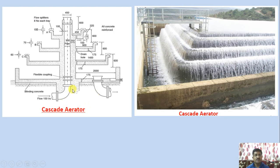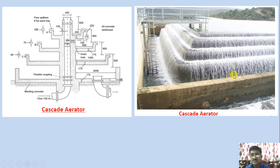Looking at the cross-section of the cascade aerator, you can see the water is introduced at the center from the rising main and passed over these staves. Because of this exposure, oxygen mixes into the water. The central pipe introduces water from the rising main, which is then passed over the steps. The design varies based on various requirements.